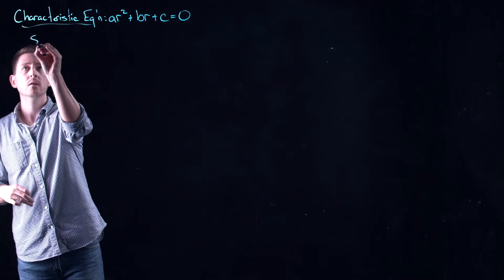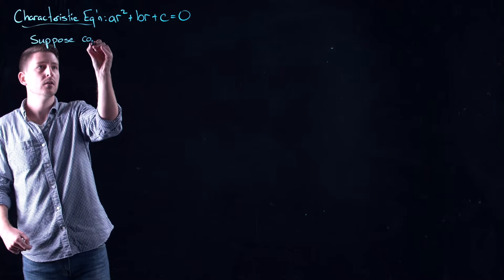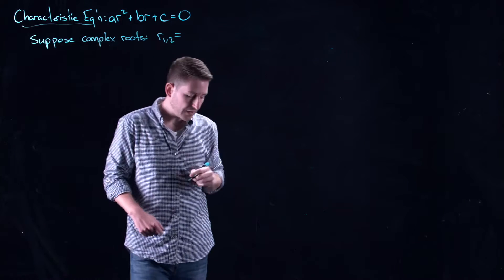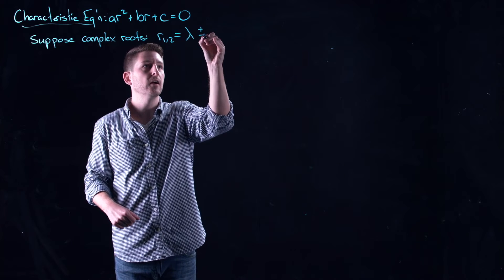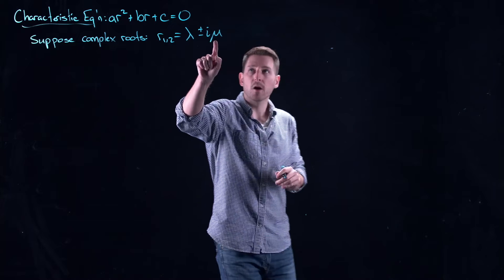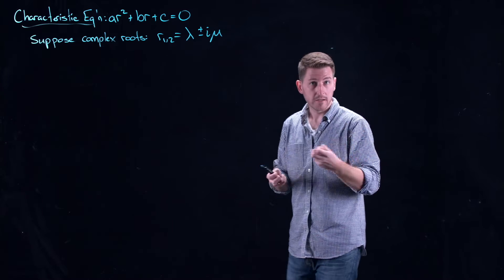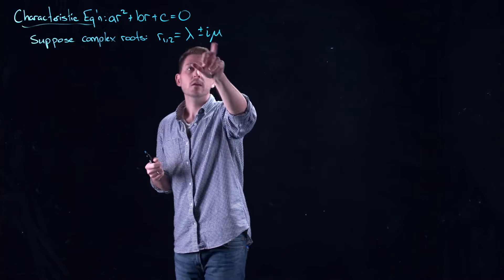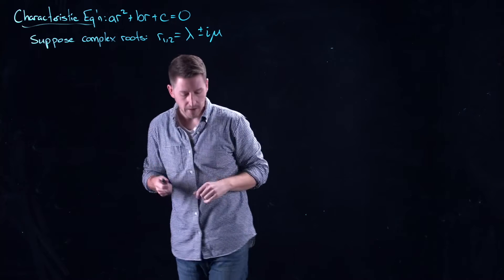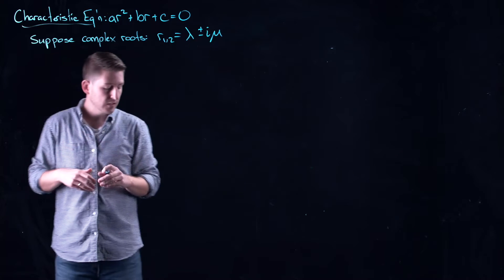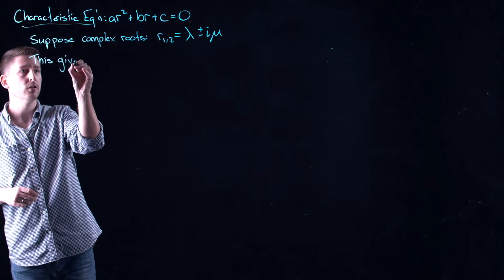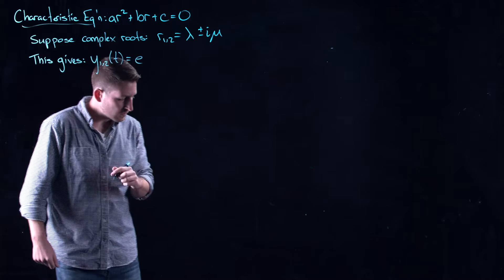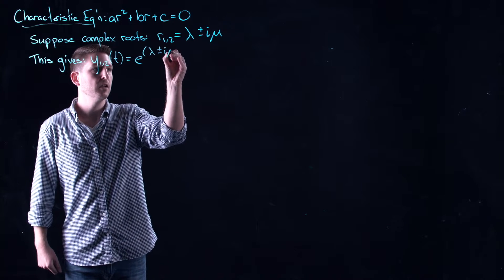Now let's suppose we have complex roots — I'll call them r₁ and r₂. We know they come as complex conjugates, differing only in the sign of their imaginary part. This comes from the plus-or-minus in the quadratic formula. So I'll call the real part λ and the imaginary part μ. Plugging into the ansatz e^(rt) gives two solutions of the form e^((λ ± iμ)t).